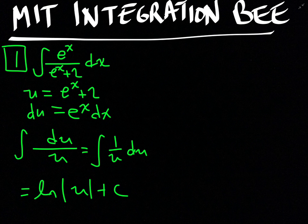Because u is e^x + 2, this is the same as the natural log of the absolute value of (e^x + 2) plus c. That is the answer.